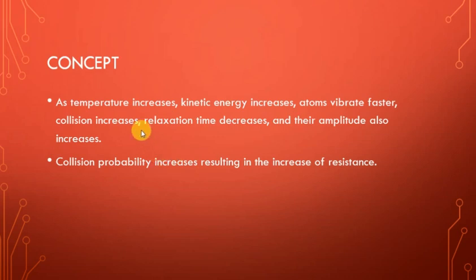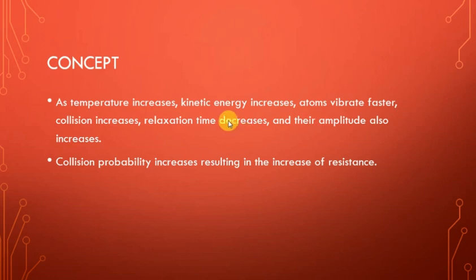When speed increases, collision increases. When collision increases, relaxation time decreases. Relaxation time is defined as the time interval between two successive collisions of electrons in a conductor when current flows through it. This means atoms don't have enough time to settle down, because just before getting set, new collisions occur.